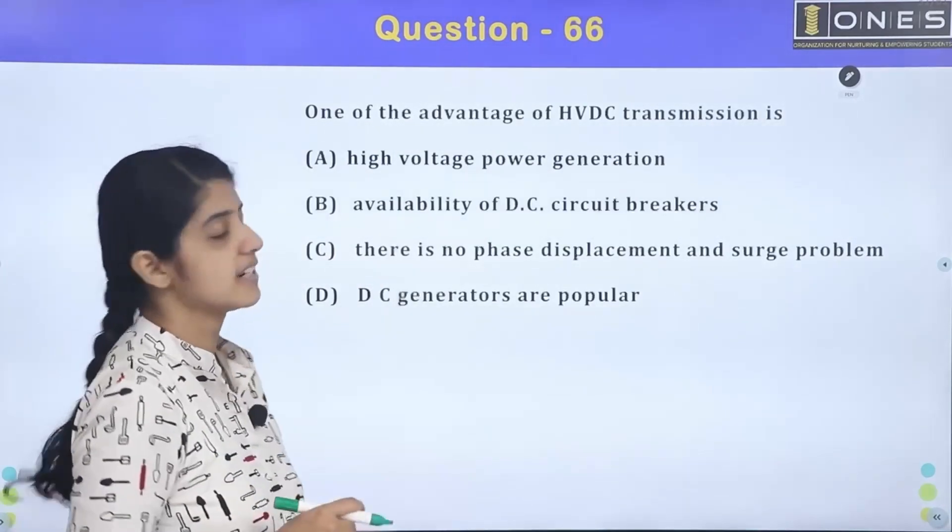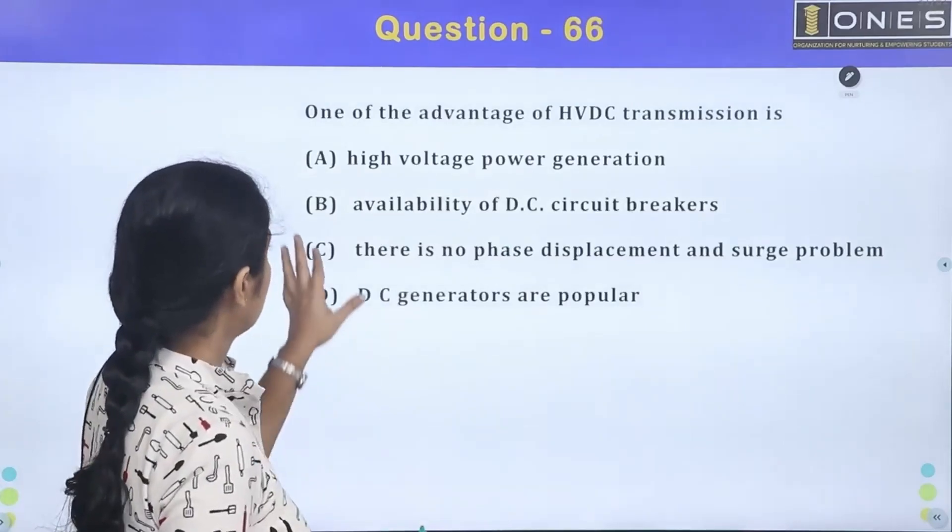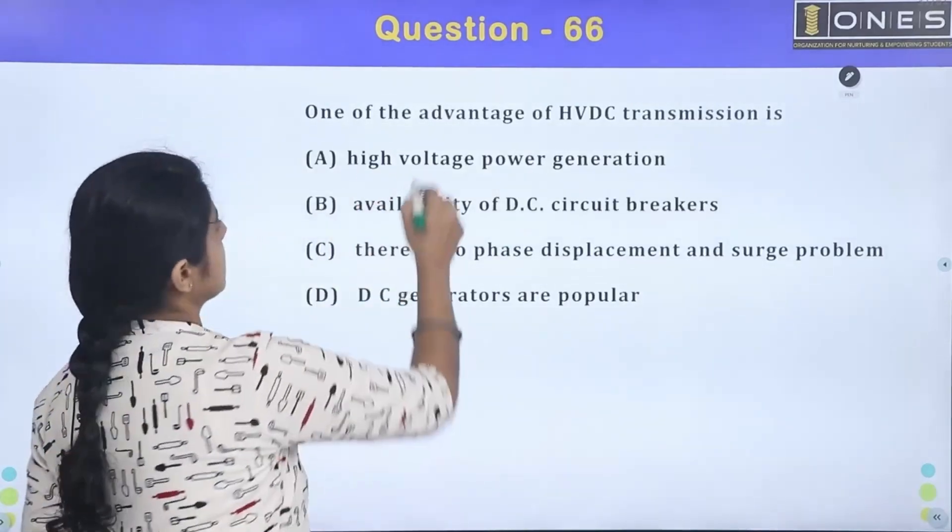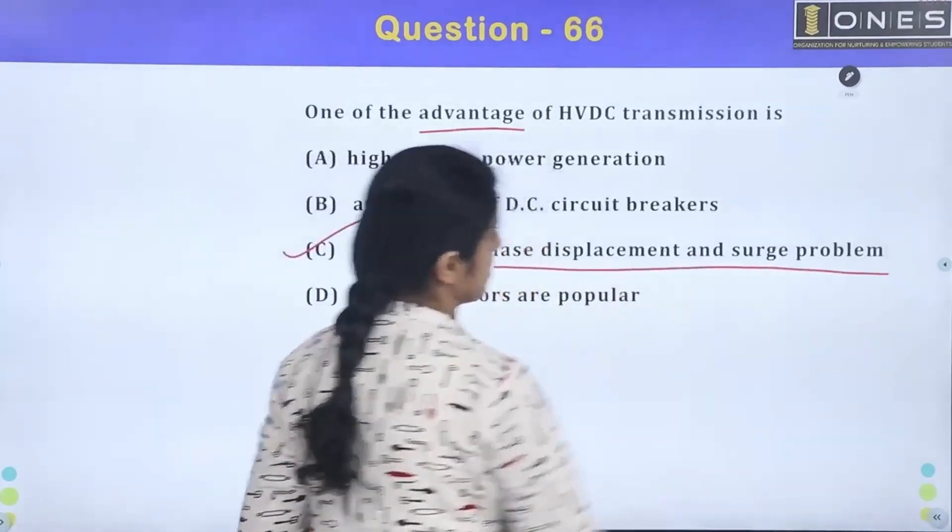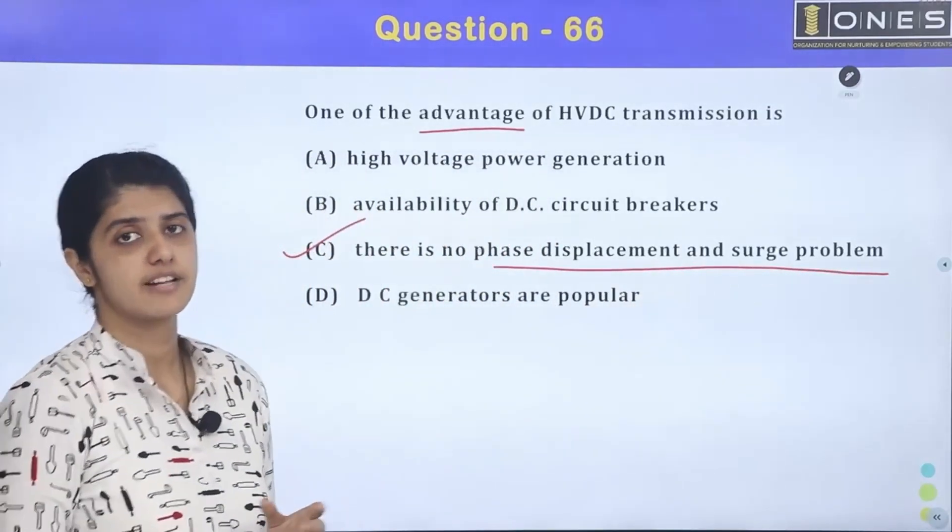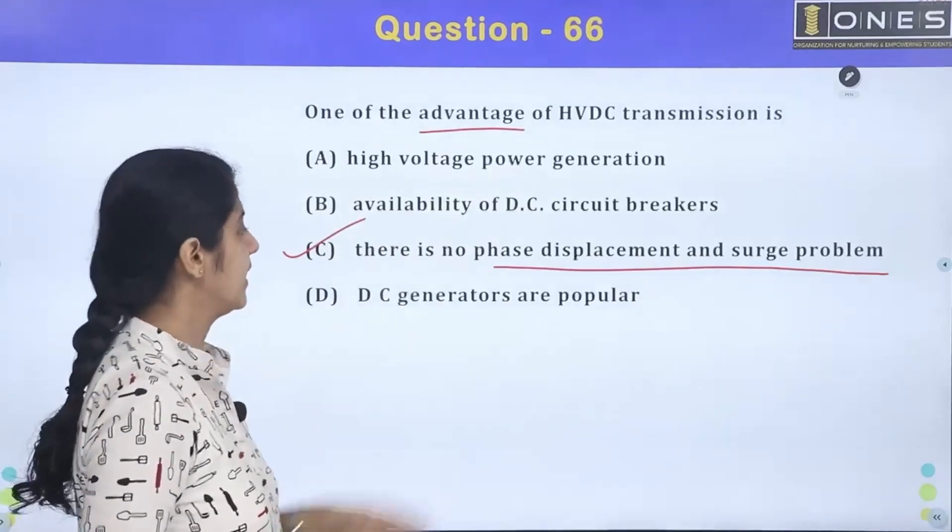What is the HVDC transmission advantage? The answer is option C. Phase displacement and surge problem cannot occur in HVDC transmission. This is the advantage.